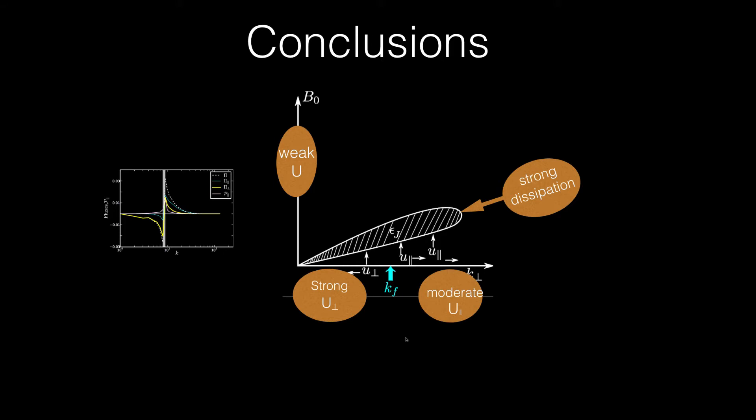We summarize the dynamics of QS-MHD turbulence in a schematic diagram. First, in Fourier space, the energy is concentrated near the equator for large N. So there is very little energy for k_parallel, approximately zero. This region has very little energy.